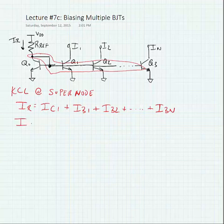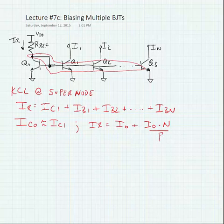Now, if we note that IC0 is approximately equal to all of the other collector currents, we can find that IR is equal to I sub 0 plus I sub 0 times N over beta. In other words, I out is equal to IR divided by 1 plus N divided by beta.